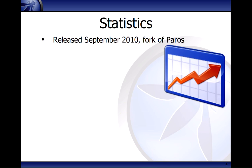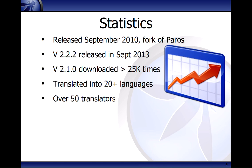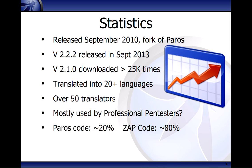Some statistics: I released ZAP just over three years ago as a fork of Paros proxy. The last release was 2.2.2 in September — probably around 15,000 downloads. The previous main release, 2.1.0, was downloaded 25,000 times, not including people who used it as part of the major security distributions. It's been translated into over 20 languages and we have over 50 translators — I'm really proud of that. In case you think it's just a fork of Paros, I recently did some stats and reckon about 20% of the code base is still Paros code and 80% is new stuff.